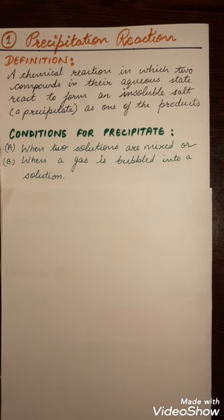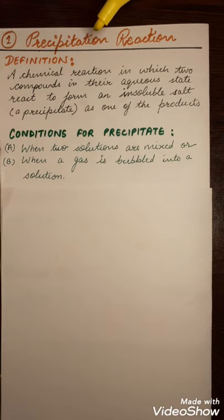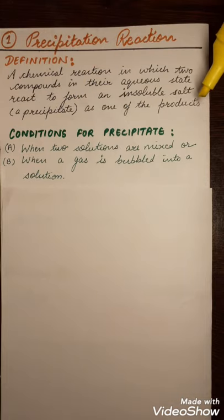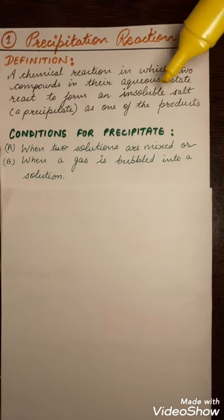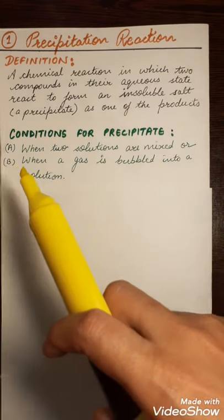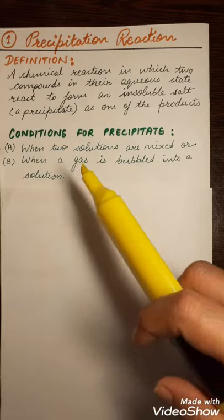Now let us start the first type of double decomposition reaction, that is precipitation reaction. Precipitation reaction means there will be insoluble salt formation after the reaction. A chemical reaction in which two compounds in their aqueous state react to form an insoluble salt — also known as a precipitate — as one of the products. There are two conditions: first, both reactants are in solution state; second, one reactant is a gas and the other is in solution form. Then a precipitate will be formed.